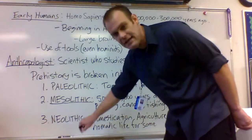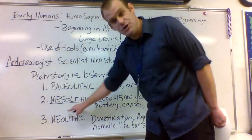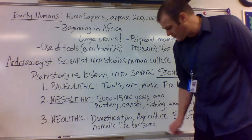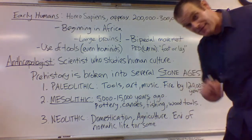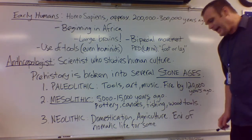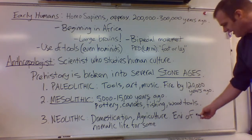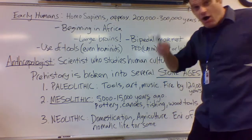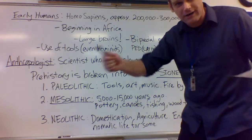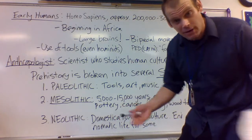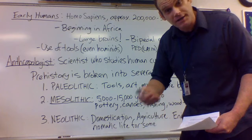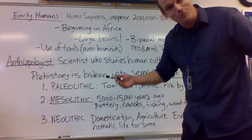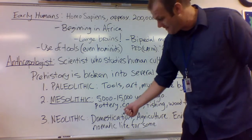The last stone age is the Neolithic — if you'll remember, this means the New Stone Age. Major characteristics of this stone age would be domestication of animals, agriculture, and specifically the end of nomadic life for some. We're going to move away from that constant migration of trying to find food, water, and shelter, and instead sit down and build a community, build a village, and stay year-round. Instead of having to move around all the time, we're actually going to start building our homes and our cities — a big step.